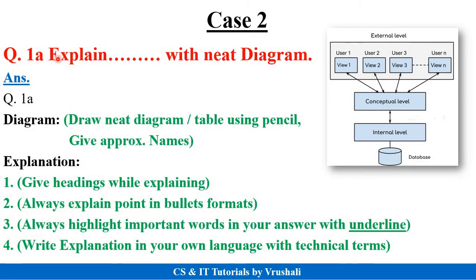The next case is a question like 'explain a particular topic with a neat diagram.' Always draw the diagram first using pencil only, not pen. For example, draw a database structure diagram using pencil, give appropriate names to each and every component, and at the end give the diagram a name like 'Database Structure Diagram.' For the explanation, explain the diagram component-wise — for example, give the heading 'Internal Level' and explain points 1, 2, 3, 4; then 'Conceptual Level' with points 1, 2, 3, 4, and so on. Again, use numbering format, underline important words, and write in your own language.